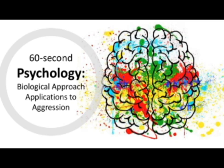Another neurotransmitter linked to aggression is dopamine. Dopamine helps to regulate our motivation and respond to rewards. However, it also interacts with serotonin to increase aggression. When there is a decrease in serotonin and an increase in dopamine, the orbitofrontal cortex not only struggles to control impulses, but impulsivity is actually increased. Testosterone has also been linked to aggression through numerous studies. For example, Debs and Hargrove found a correlation between testosterone levels and violence in female prisoners.